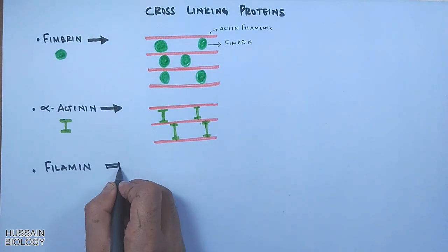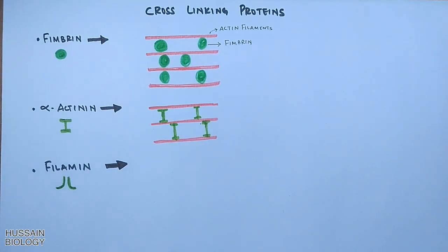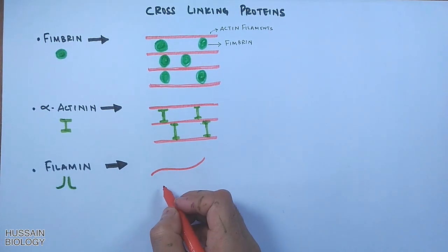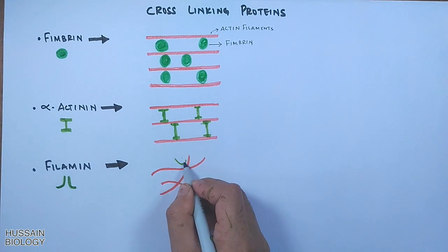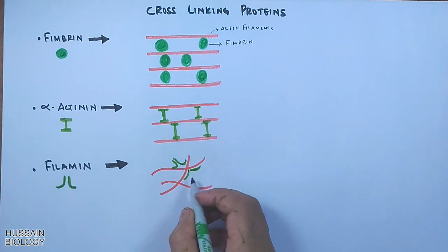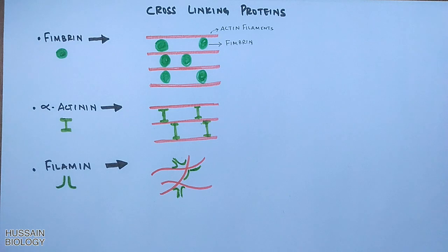Then we have filamin protein, as shown in the diagram. It has two actin binding sites with a V-shaped linkage between them, so that it cross-links actin filaments into a network with the filaments oriented almost at right angles to one another. This forms a mesh-like network.